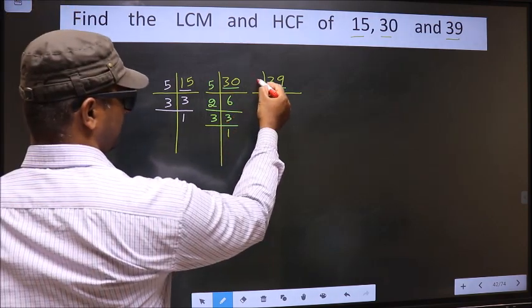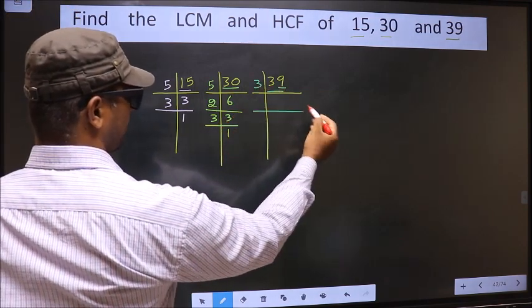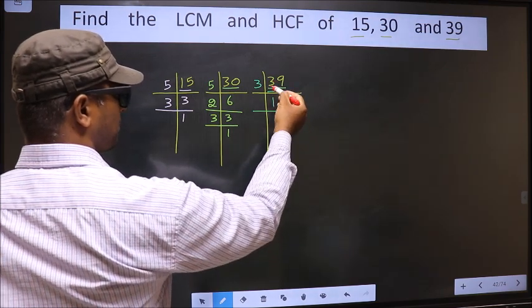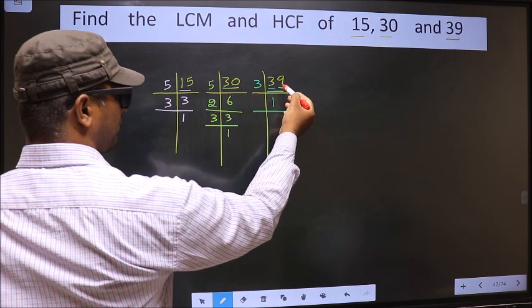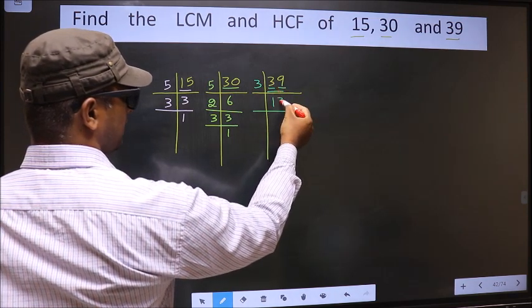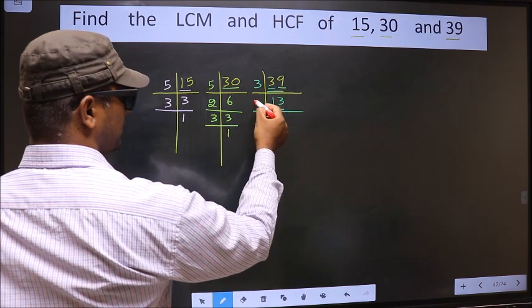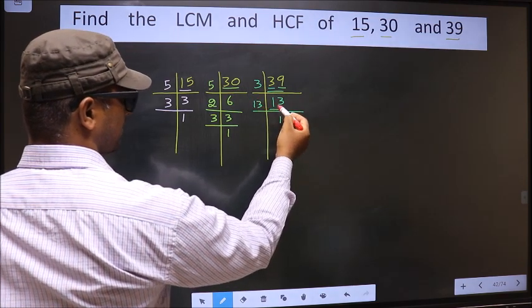So we take 3 here. The first number, 3. When do we get 3 in 3 table? 3×1 = 3. The other number, 9. When do we get 9 in 3 table? 3×3 = 9. Now here we have 13. 13 is a prime number, so 13×1 = 13.